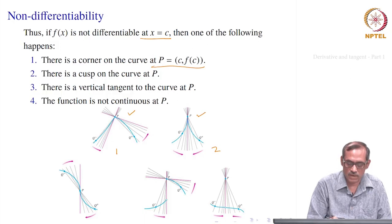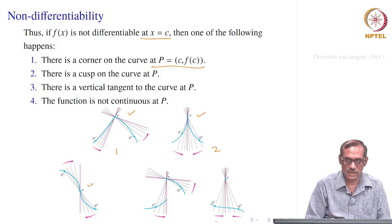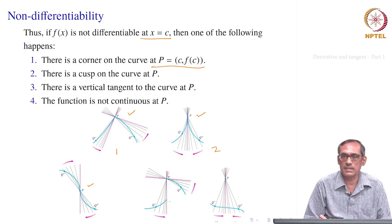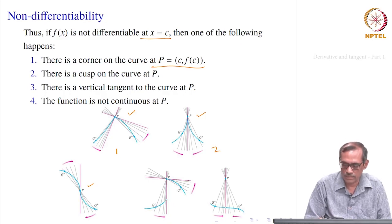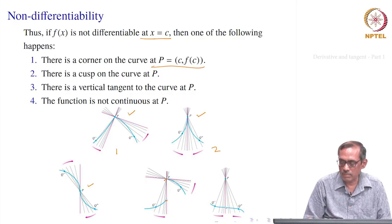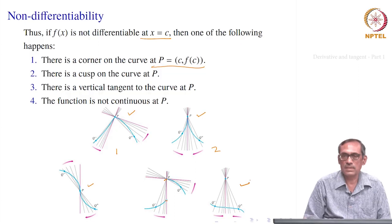There can be a vertical tangent to the curve — as in y = x^(1/3). Or the function may not be continuous at x = c. When it is not continuous, two scenarios arise: the limit does not exist (the left-side limit is different from the right-side limit), or the limit exists but does not equal the function value.